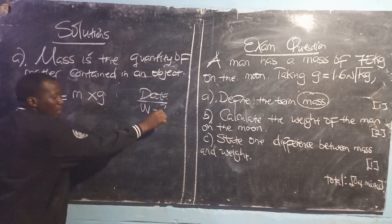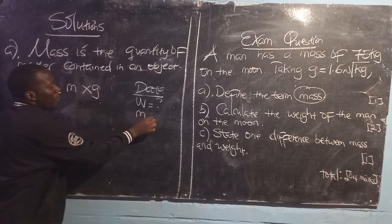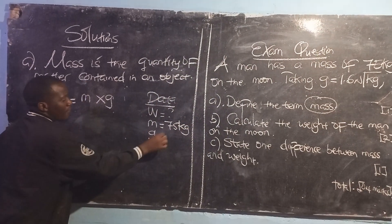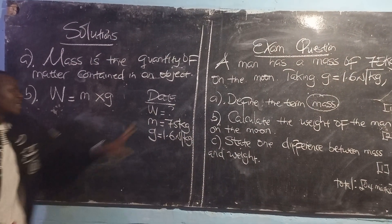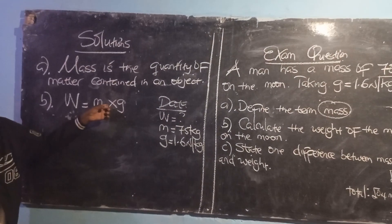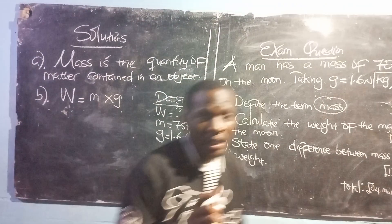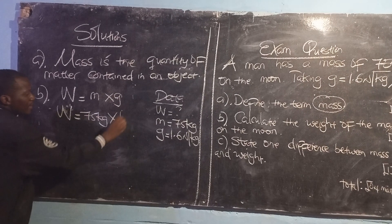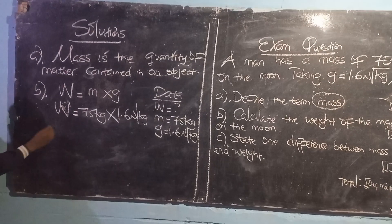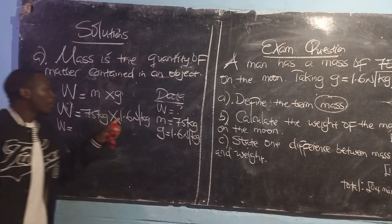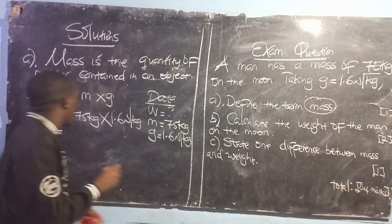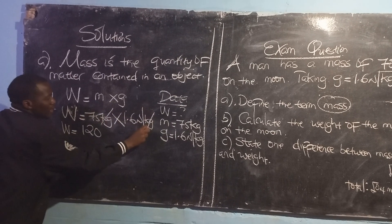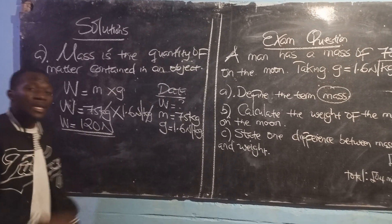The value for weight we don't have, because that is our unknown. The value for mass is 75 kg — make sure you work with units. Gravity is 1.6 newtons per kg. This data will be substituted into the correct formula: weight equals 75 kg multiplied by 1.6 N/kg. Then 75 multiplied by 1.6 gives us 120. We cancel the spectator units and we remain with newtons. So our answer is 120 newtons.